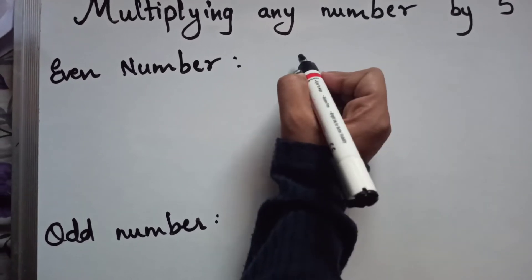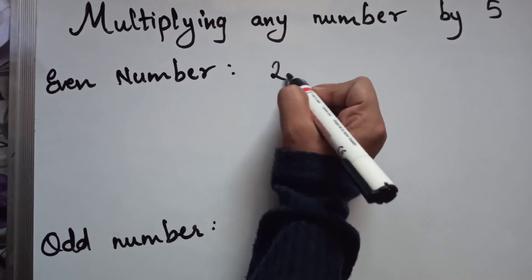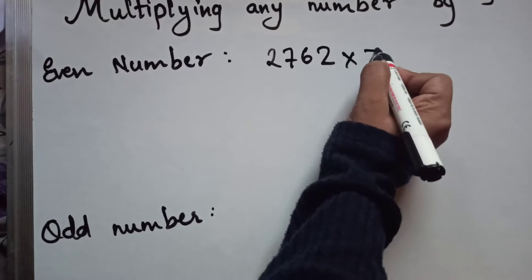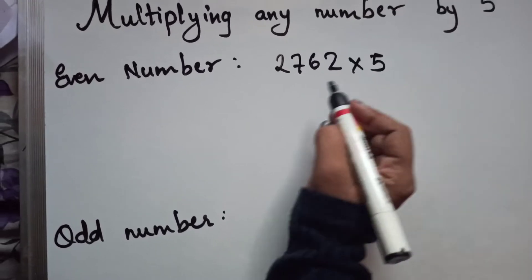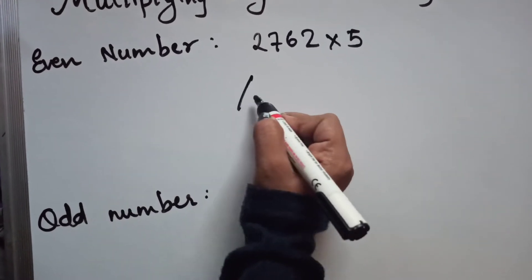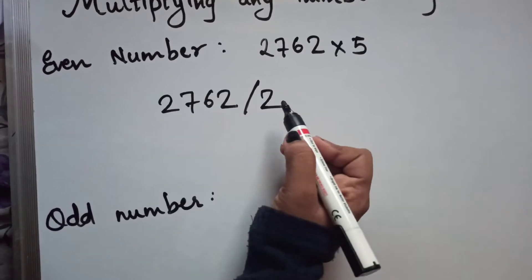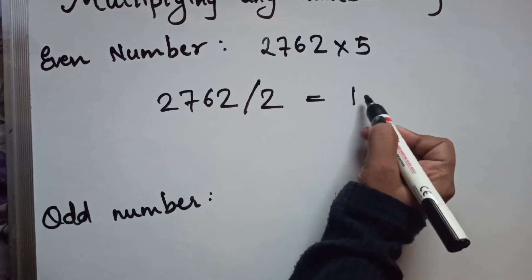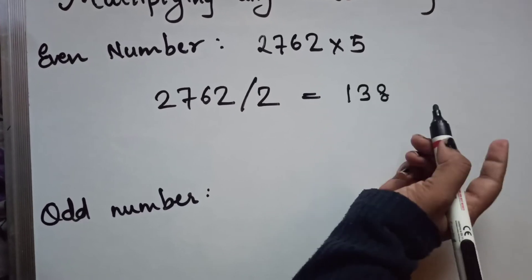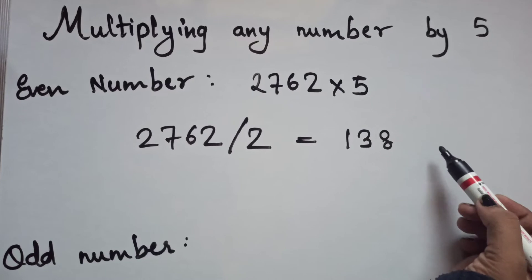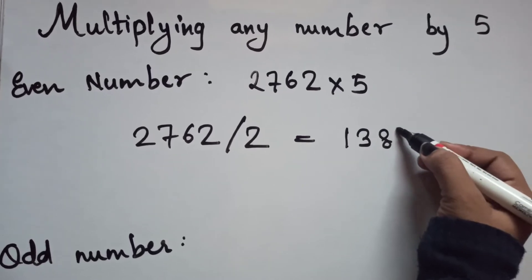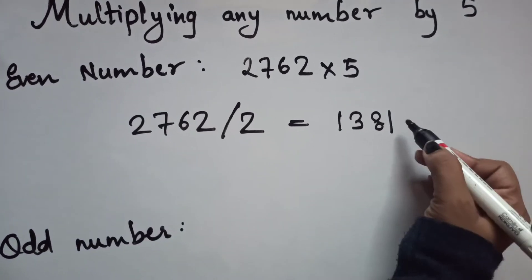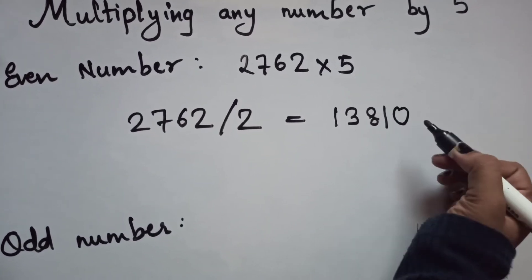For an even number, for example 2762, divide it by 2 to get 1381. Since the original number is even, add a 0 to the result, giving 13810. That is 2762 × 5.